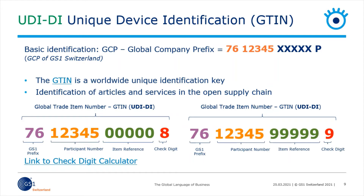The base of the GTIN is the GCP. It is the '76' here in purple — this is the GS1 prefix Switzerland number. The participant number here in orange — 1, 2, 3, 4, 5 — would be your company number, and you will get that number when you become a member of GS1 Switzerland. As with the basic UDI-DI, three parts of the UDI-DI cannot be changed: you can neither influence the GS1 prefix, the orange participant number, nor the red check digit at the end.